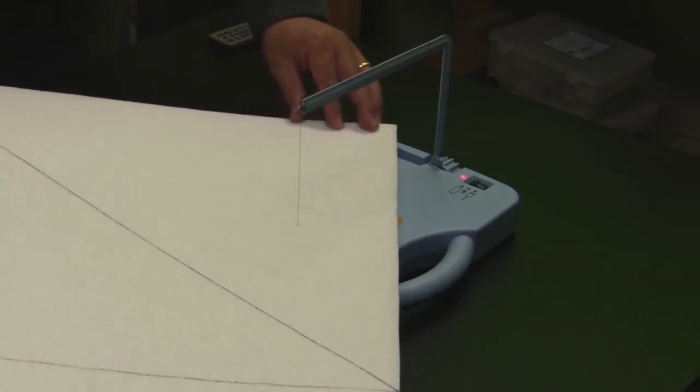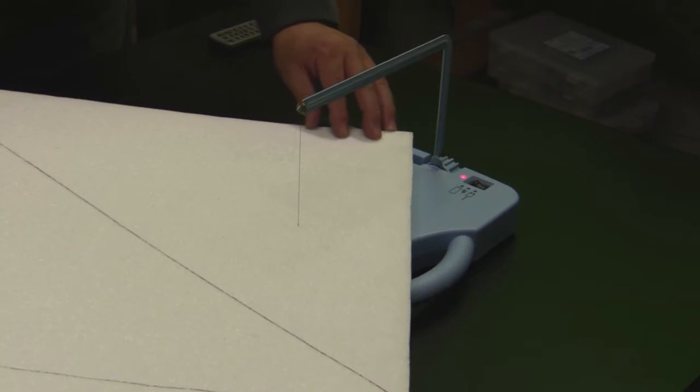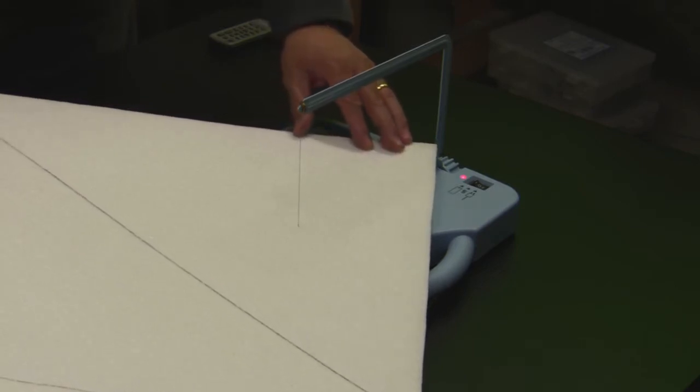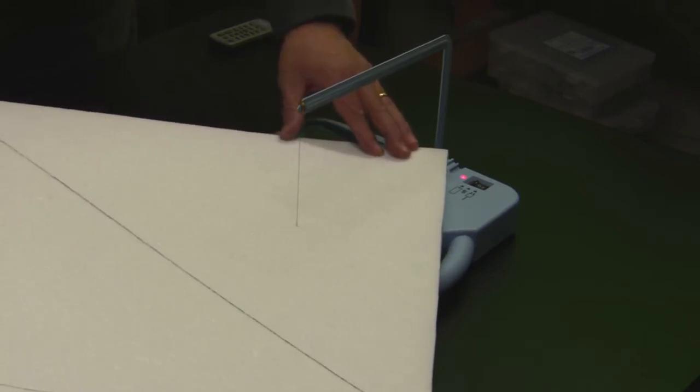Once I get this piece trimmed off, I should be able to follow the line when I make the second pass.